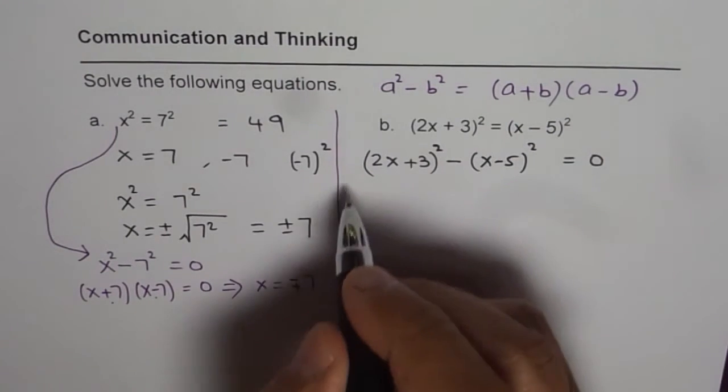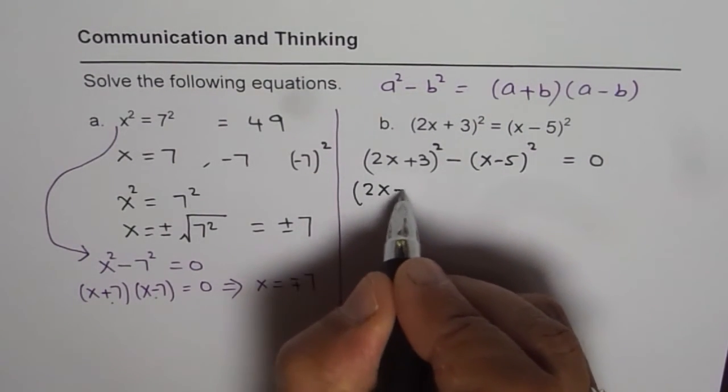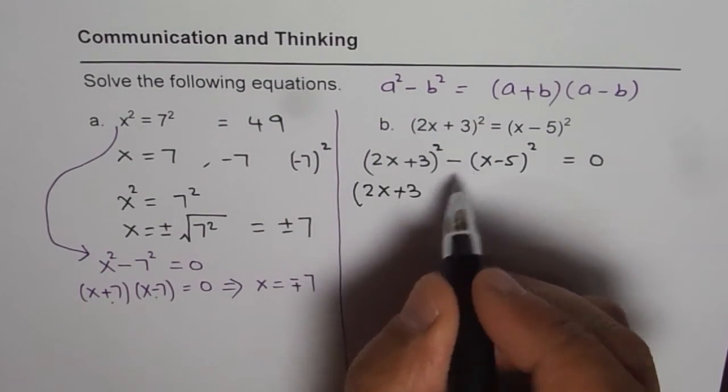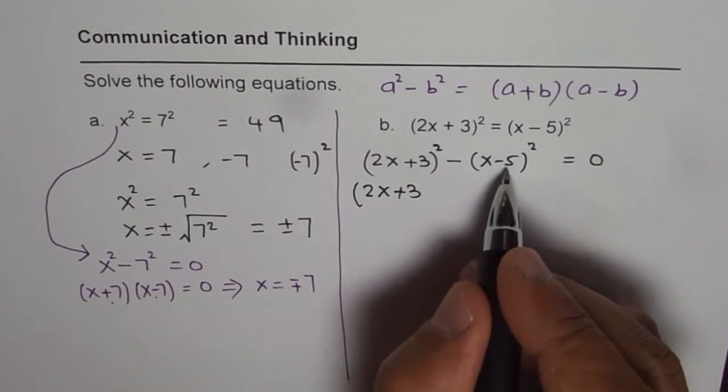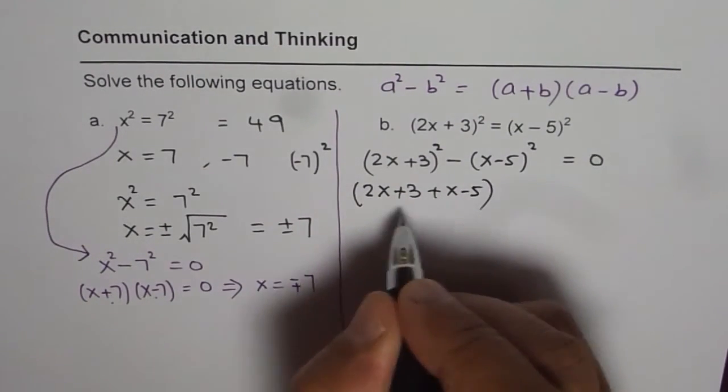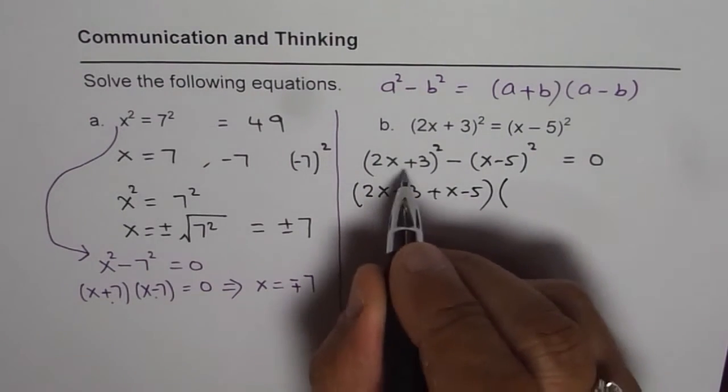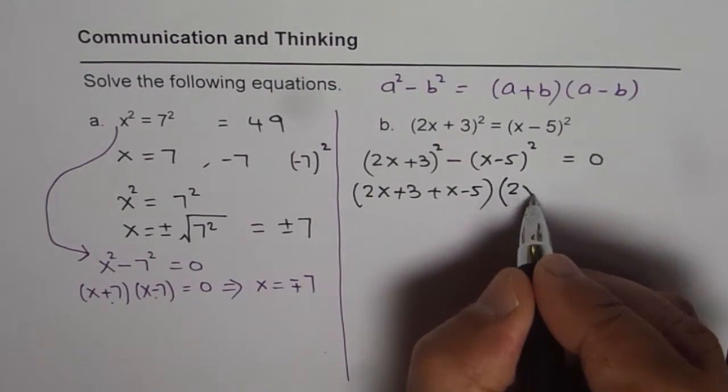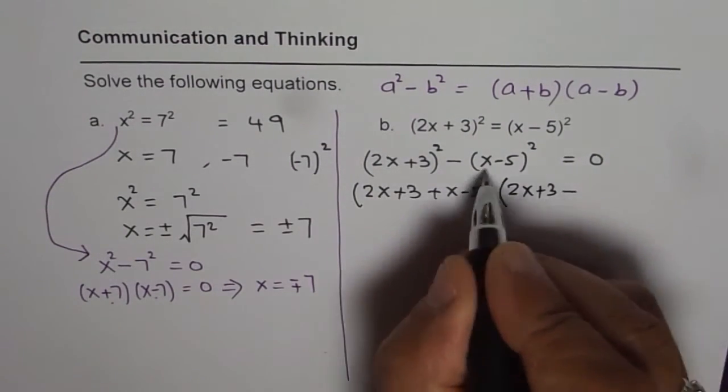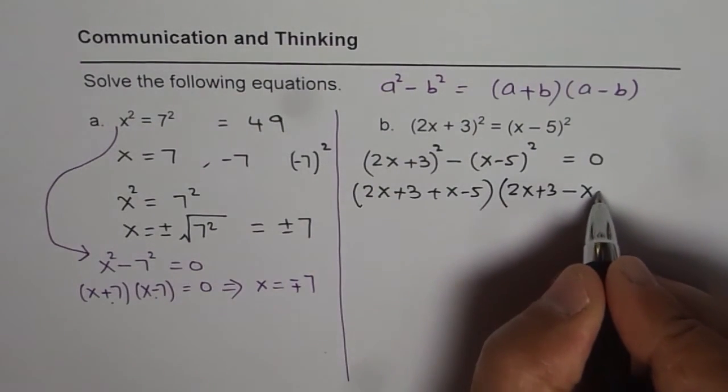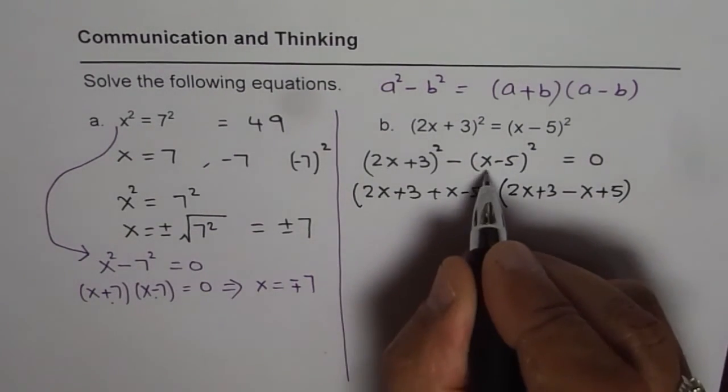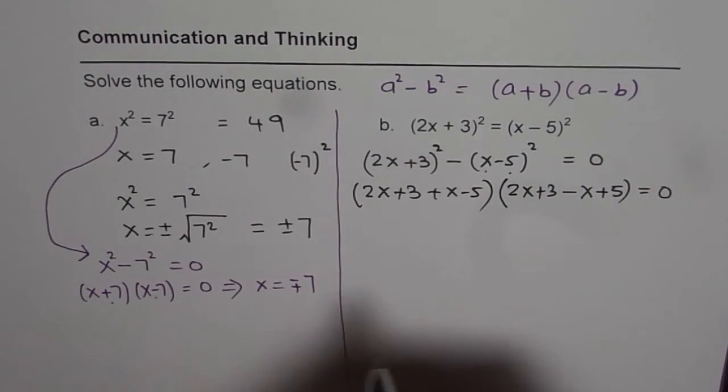A is 2x plus 3. So we can write this as 2x plus 3 a plus b. b is x minus 5. So plus x minus 5. That is the first term. The second is a minus b. That is 2x plus 3 minus of this will be minus x plus 5. Right? You need to reverse the sign. Equals to 0.